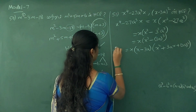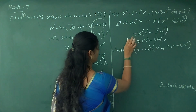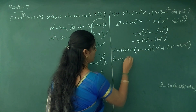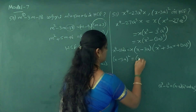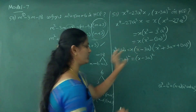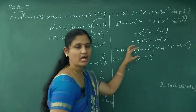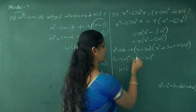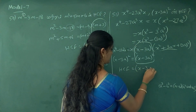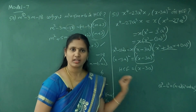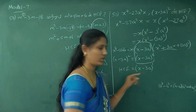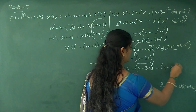Here x power 4 minus 27a cubed. Now let's add x minus 3a the whole square. Now we have two expressions and we need to find the HCF.